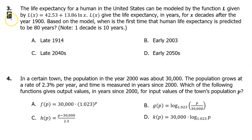Number 3 is calculator active. The life expectancy for a human in the United States can be modeled by the function L, given by L(x) = 42.53 + 13.86 ln(x). L(x) gives the life expectancy in years for x decades after the year 1900. Based on the model, when is the first time that a human life expectancy is predicted to be 80 years? Note, one decade is 10 years.